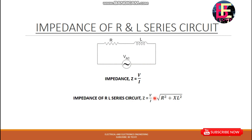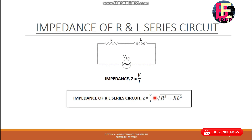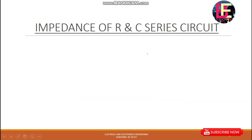Then we get the R and C circuit. This is the value of R resistance and capacitive reactance. The R and C series has resistance R and capacitance C. That gives us what we call the resistance and capacitance series impedance.